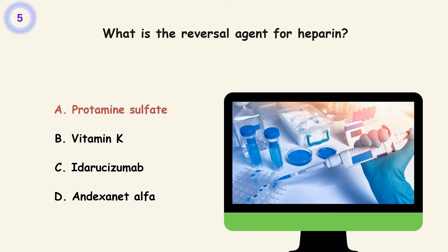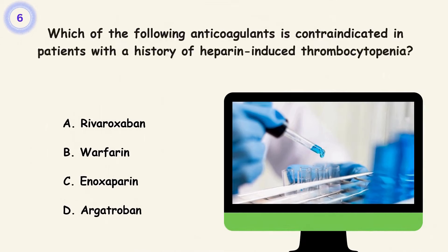Question 6. Which of the following anticoagulants is contraindicated in patients with a history of heparin-induced thrombocytopenia? A. Rivaroxaban. B. Warfarin. C. Enoxaparin. D. Argatroban. Answer is C. Enoxaparin.